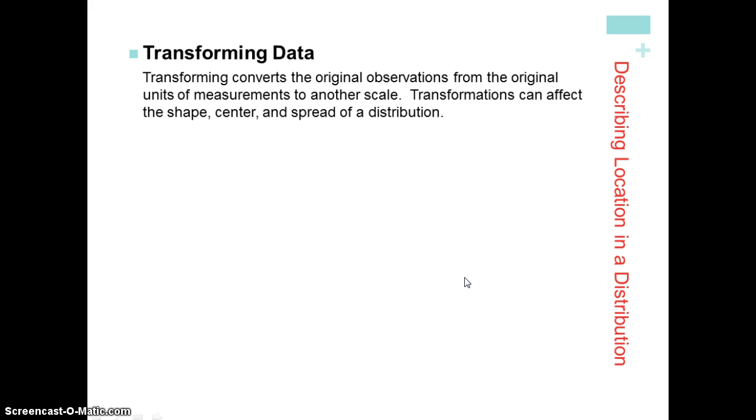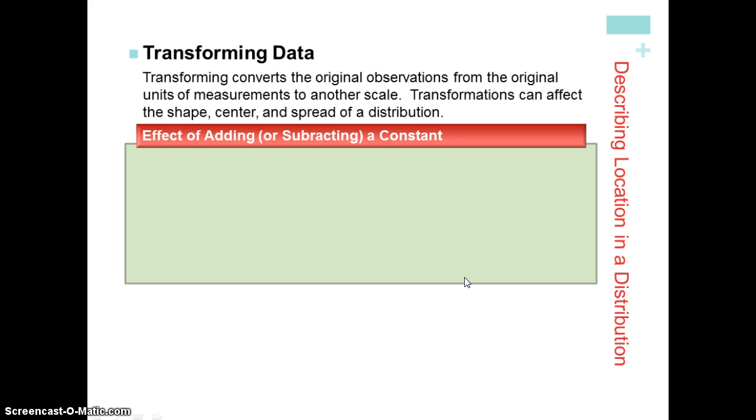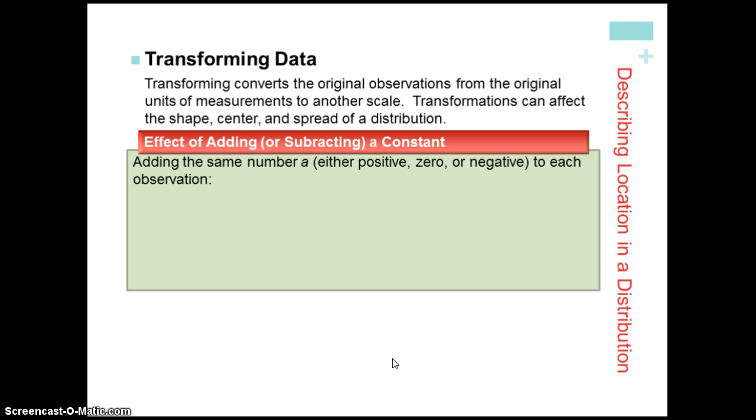Okay, let's talk about transforming data. Transforming data is when you're performing a linear transformation. And when you're doing that, what happens to the shape, center, and spread of a distribution? This might be, for example, changing from inches to feet. Something like that. That would be one type. The first type of transformation we're going to look at is just adding or subtracting a constant. So think of it this way. Let's say you take a test in AP Statistics and your teacher decides to, once she sees the scores, give everyone a 10-point bump. That would be taking all of the values and just adding 10 points to each individual value. So if we were to do that, what would happen?